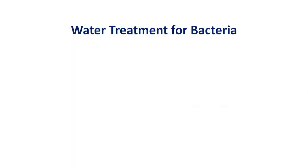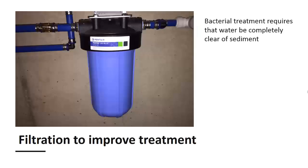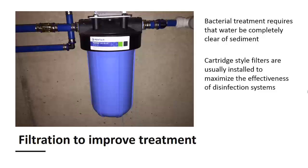Other treatment solutions include boiling, ozonation, ultraviolet light, and chlorination. Boiling is very effective but is not a permanent solution, and ozonation is extremely expensive for household-size units. Ultraviolet light and chlorination are the most common approaches to bacteria treatment for wells and springs. All bacteria treatment requires that the water be completely clear of sediment. For this reason, cartridge-style sediment filters are usually installed first to remove all sediment and maximize the effectiveness of the disinfection treatment. These cartridge filters typically need to be replaced every two to three months, or when water pressure begins to drop as the filter plugs.